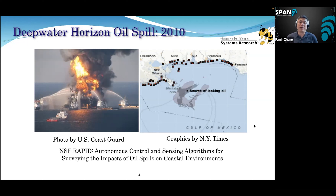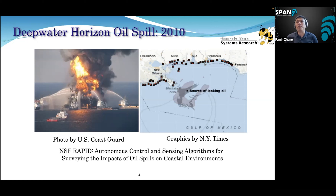The first example is the Deepwater Horizon oil spill event in 2010. About 300 million gallons of crude oil was leaked into the Gulf of Mexico. This is a situation shown by the New York Times where each black square on the map represents a beach where tar balls were observed. It was devastating — imagine you pay half a million dollars for a beach house and the next day find tar balls in your backyard.